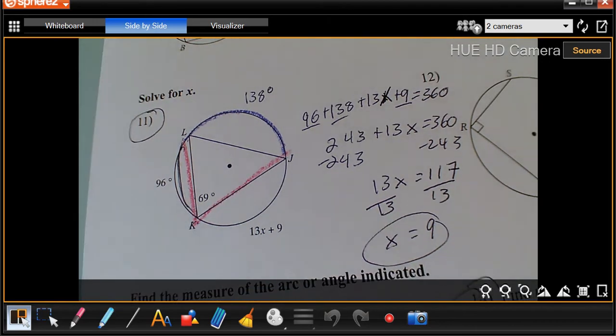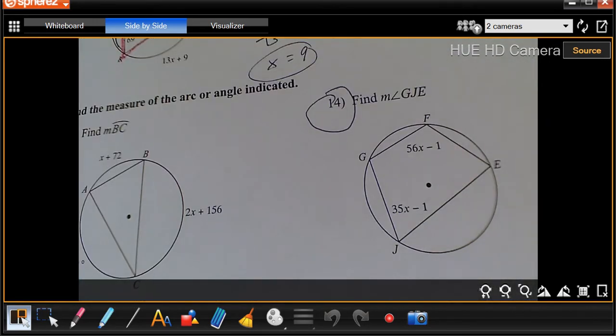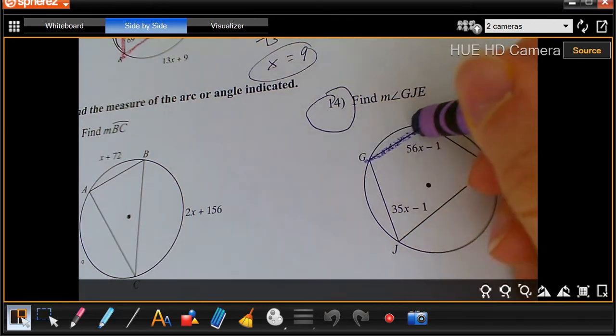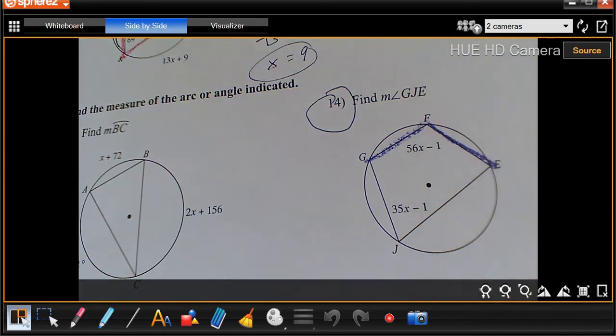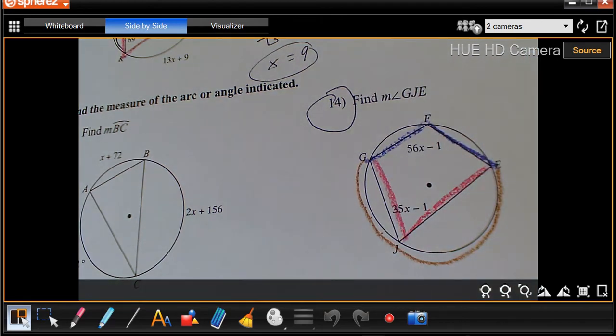One more, and then we're going to be done with inscribed angles. We're going to do number 14. For number 14, I see this purple angle right here, GFE, goes with this brown arc right here. And then I've got this red angle goes with this blue arc right here.